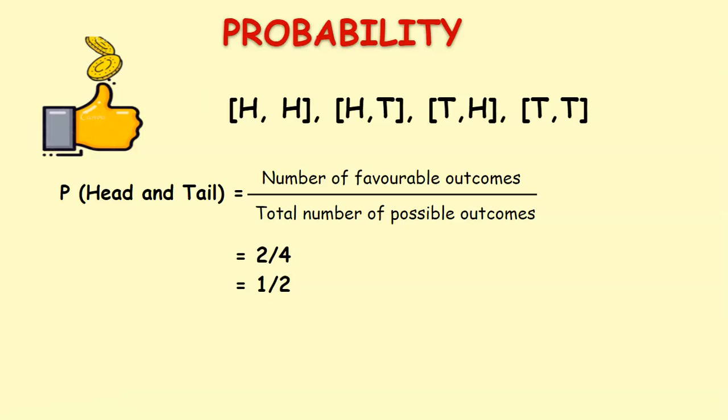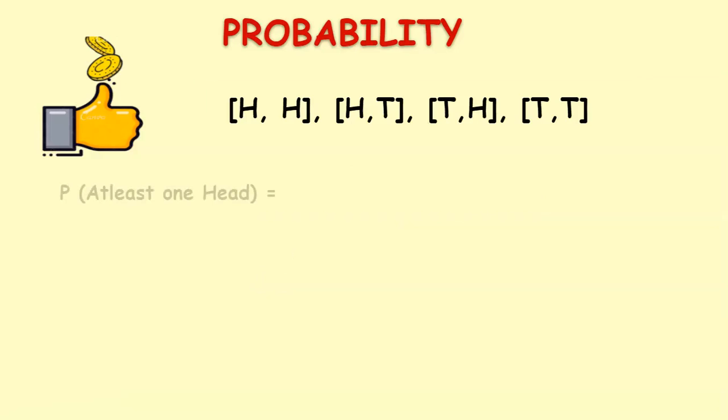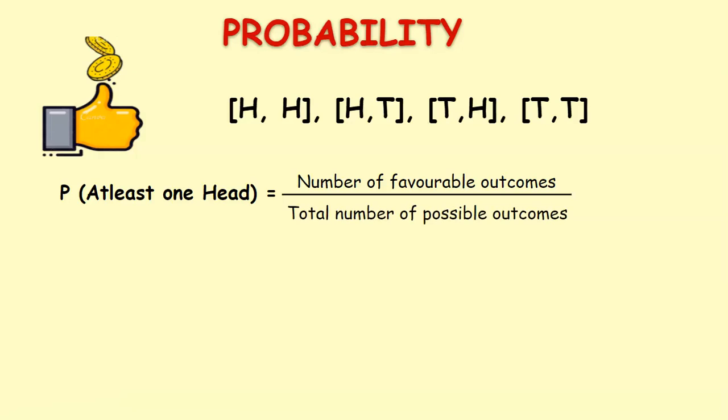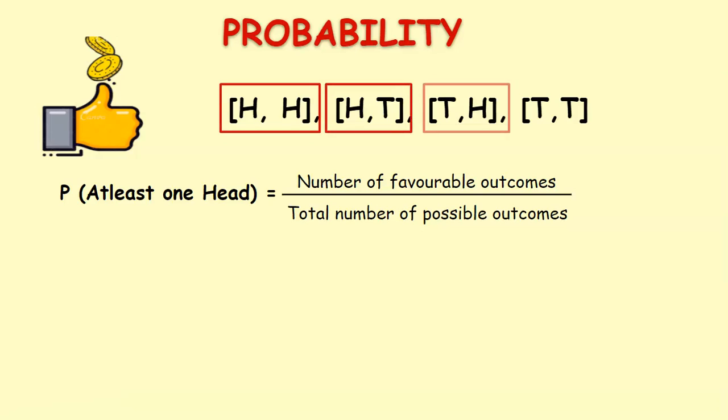Now let us see the probability of getting at least one head. What do you mean by at least one head? That means in the outcomes there should be at least one head or more. Therefore our favorable outcomes are head and head, head and tail, and tail and head, because in these three outcomes at least one head is present.